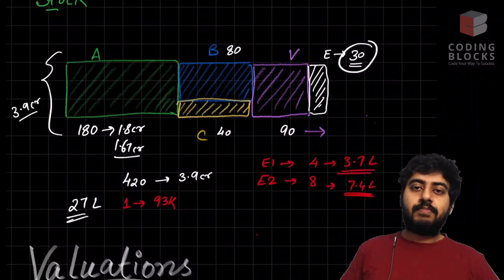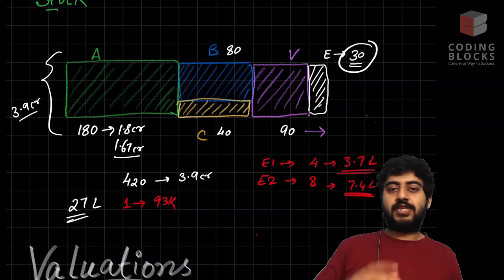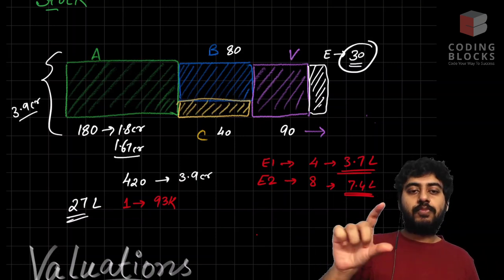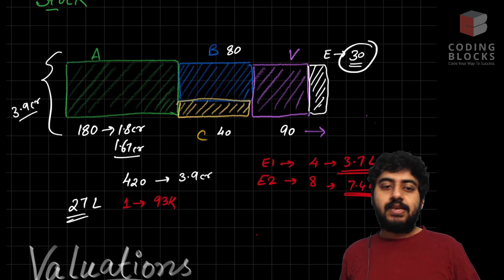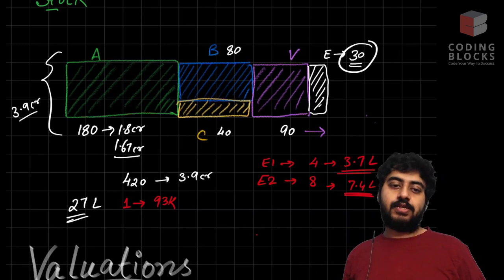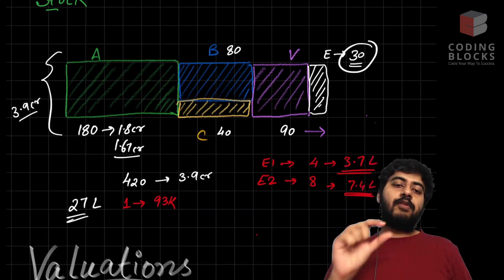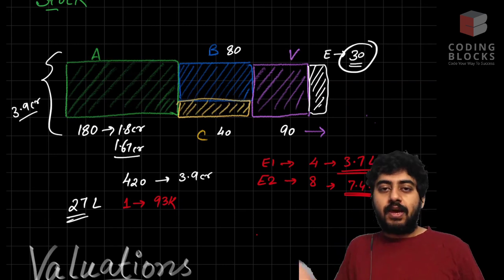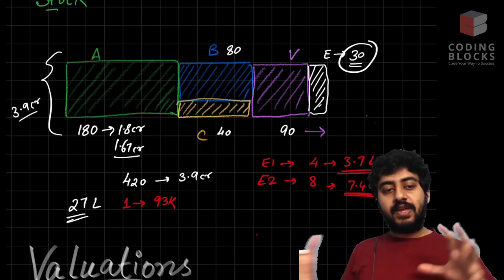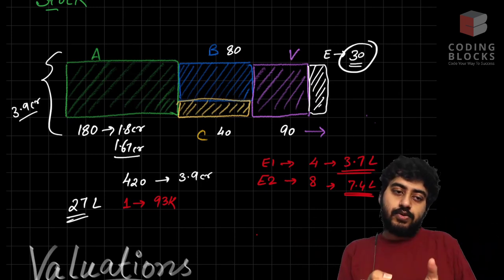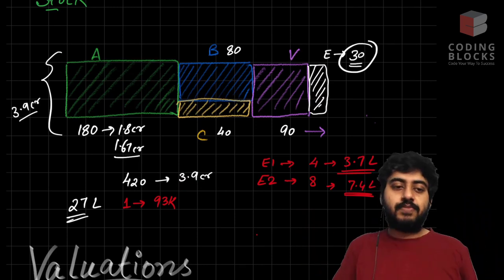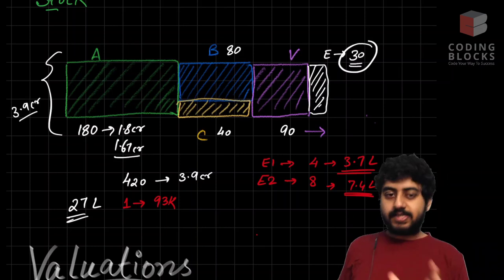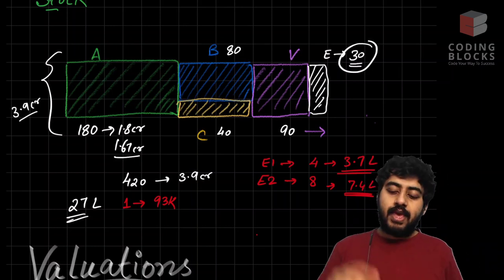Always remember: no company has more than 100% equity — the sum of all shares is always 100%. When the ESOP pool is created, the founders A, B, C, and the investor V all take a small cut in their percentage. The number of shares they own stays the same, but the denominator increases by 30, so their ownership percentage reduces slightly — for example A's paper value drops from 1.8 crore to 1.67 crore.